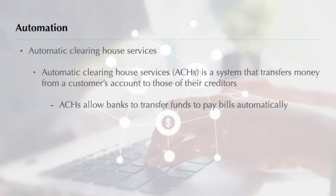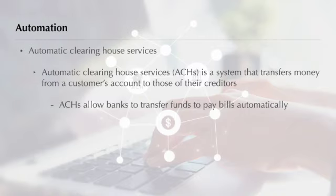Some banks make it possible for you to pay bills without writing checks. Your bank will transfer funds automatically through automatic clearinghouse services, or ACH — a system that transfers money from a customer's account to those of his or her creditors. ACH is usually used to pay regular monthly bills such as home mortgage payments, rents, insurance premiums, and utility bills. Why might you use ACH? You would save time and money on postage, seal fewer envelopes, and know that your payments will arrive on time.